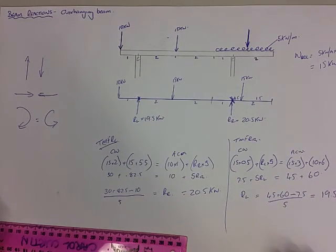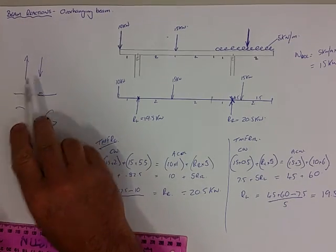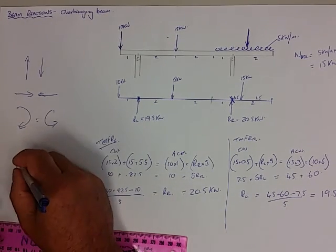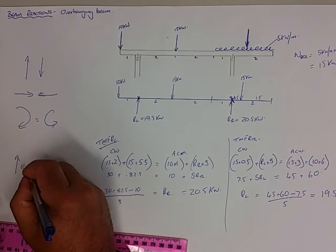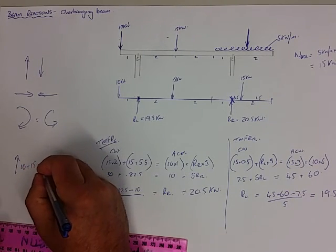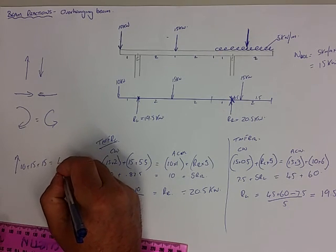Okay, we've done our calculations. Let's do our check. As with the simply supported beam, upward forces must equal downward forces. So in our upwards direction, we've got 10 plus 15 plus 15 equals 40.